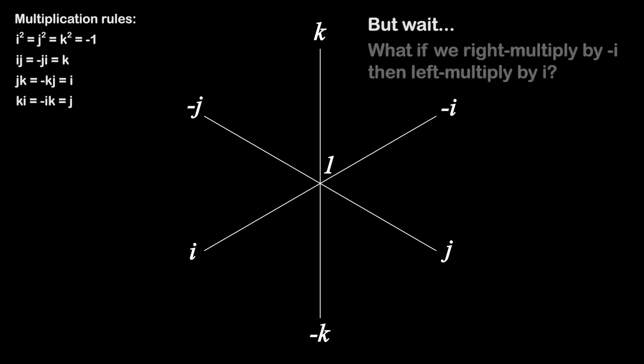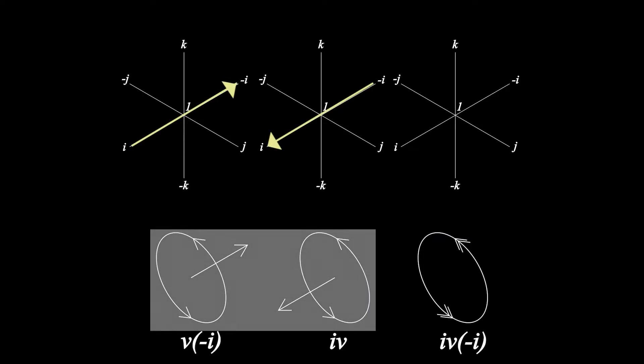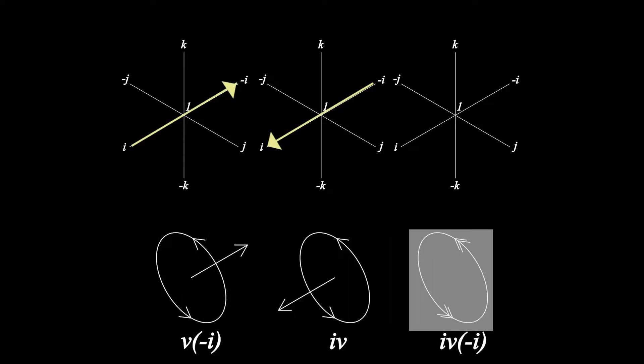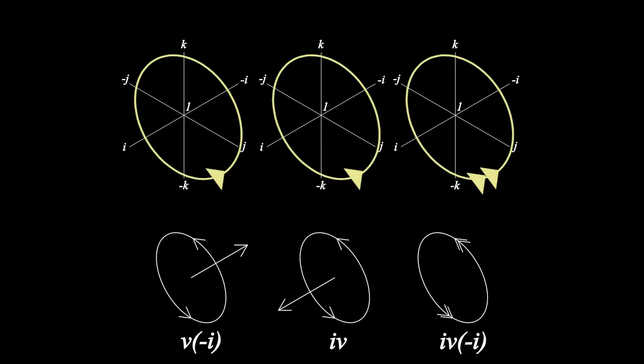But wait, what will happen if we first right multiply by minus i, then left multiply the result of that by i, so that our equation looks like i times v times minus i, where v is some unit quaternion from the diagram. Gosh, I don't know. Wait, I think I get it. The two circles spinning in different directions will cancel out. Yes, the rotation of the circle passing through 1 and i cancelled out, while the rotation of the circle passing through j and k has doubled. We have effectively created a rotation only about the i-axis.